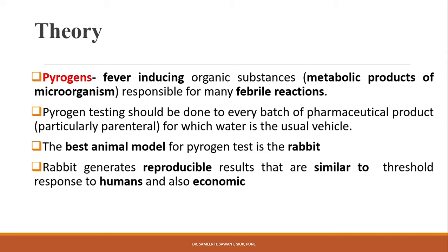The best animal model for pyrogen testing is the rabbit model. Why is the rabbit the best model? Because rabbits generate reproducible results that are similar to the tissue responses in humans, and this rabbit method is also economical.